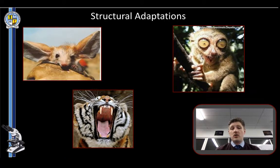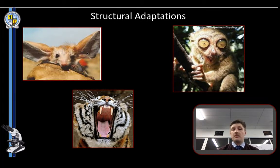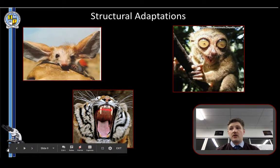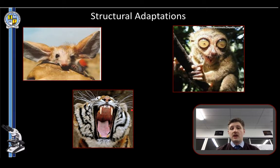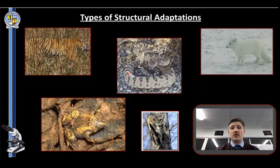Here are some really cool structural adaptations. The definition of a structural adaptation is an actual body part or parts, or a colouration, that helps an organism survive in its environment. So why do tigers have stripes? We've got camouflage, mimicry, bent hind legs, sharp teeth and claws, and body structures. Let's have a look at a few of those now.